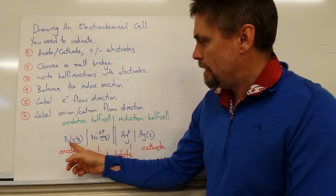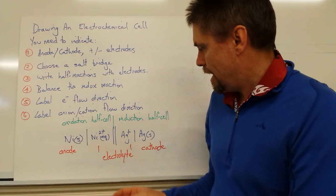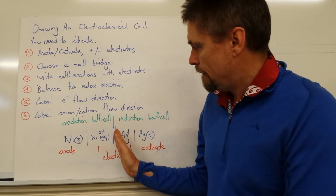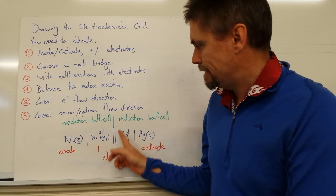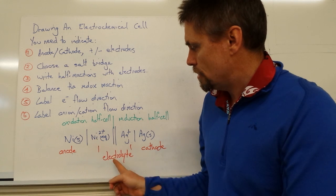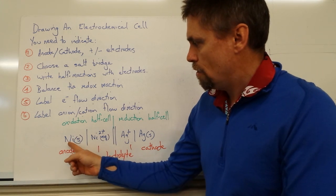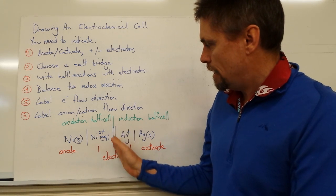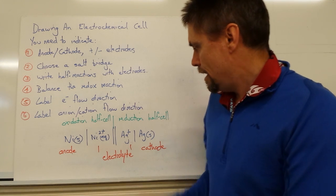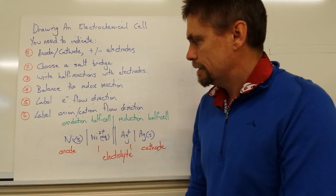Let's take a reaction. We've got nickel in a nickel solution in one half cell, and silver or silver ions with a silver electrode in the other. On the left of the double lines — which indicate a separation of cells — we have our anode, the nickel electrode, contained in an electrolyte with nickel ions. This forms our oxidation half cell: nickel goes to nickel 2+. On the right, we have silver in solution — an electrolyte containing silver ions — and our cathode, which is silver solid. This is our reduction half cell.